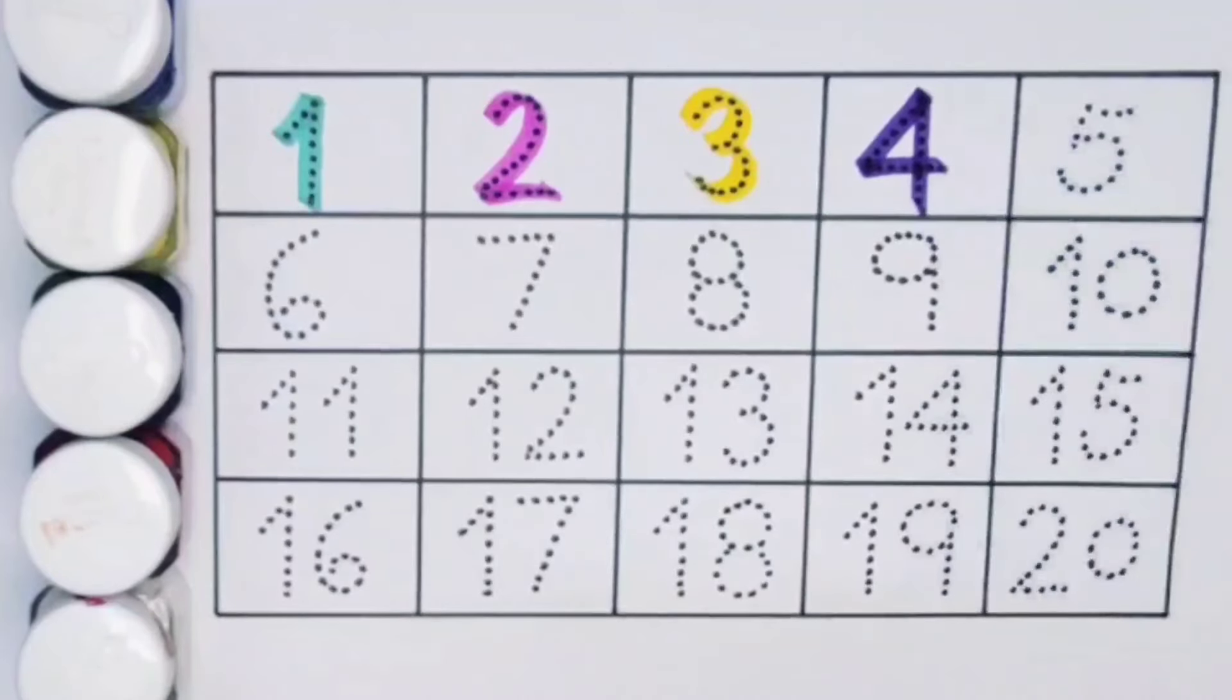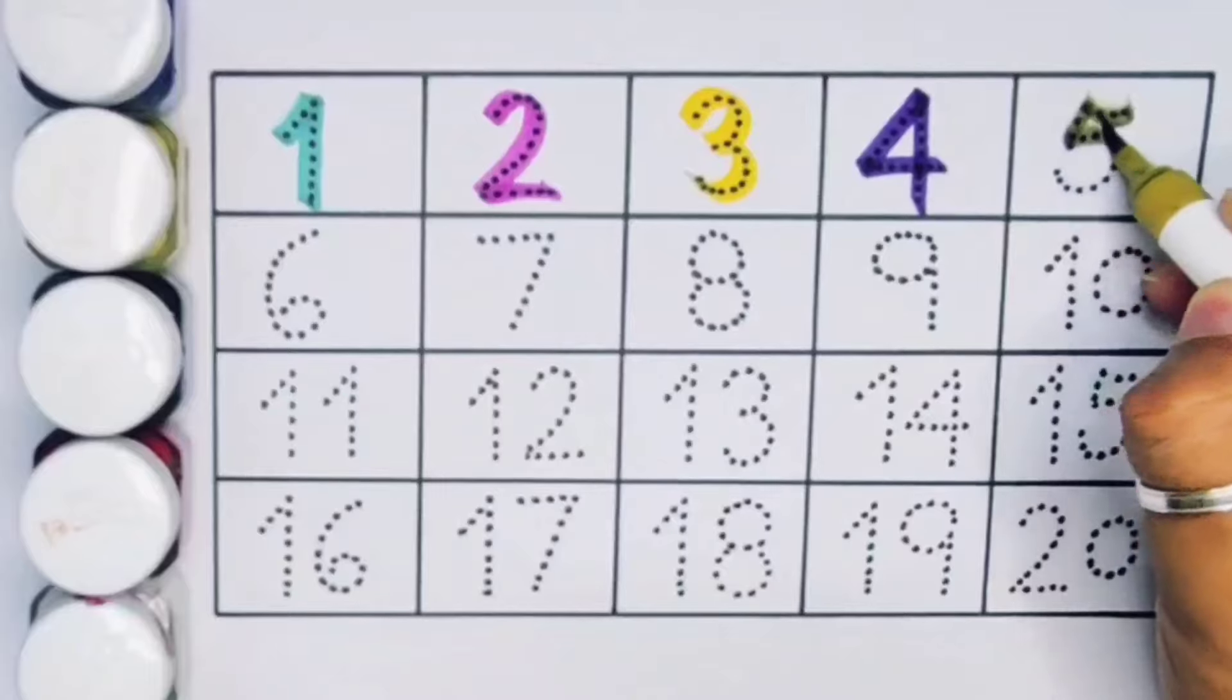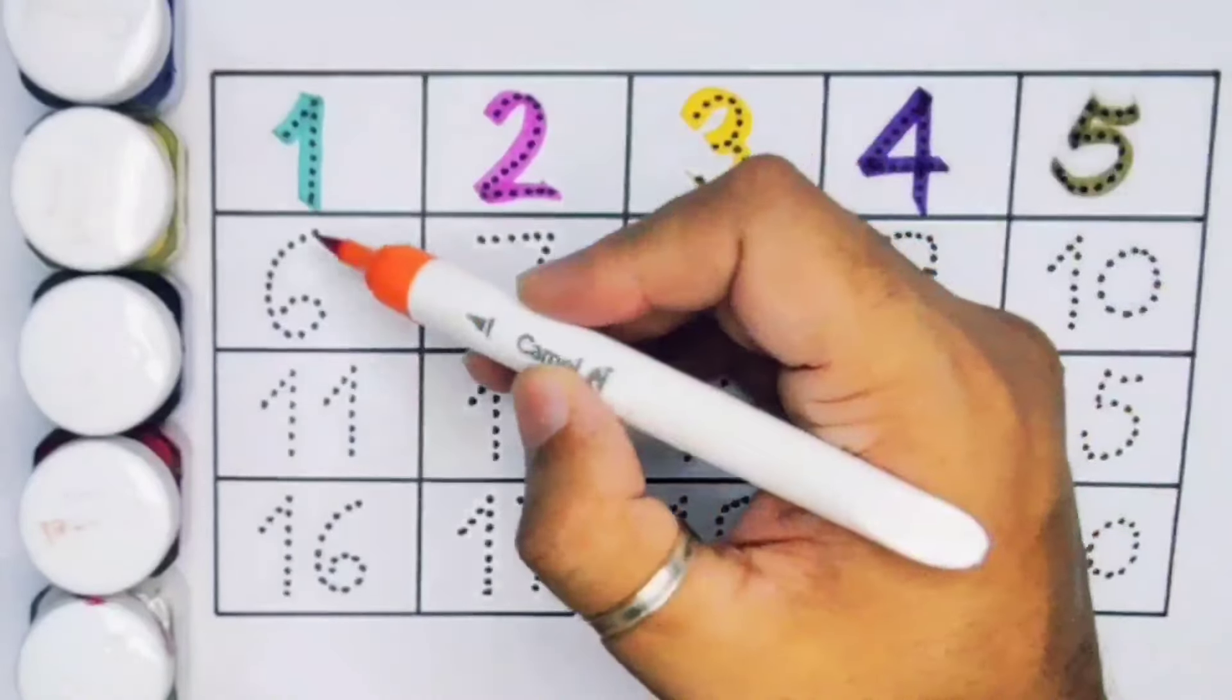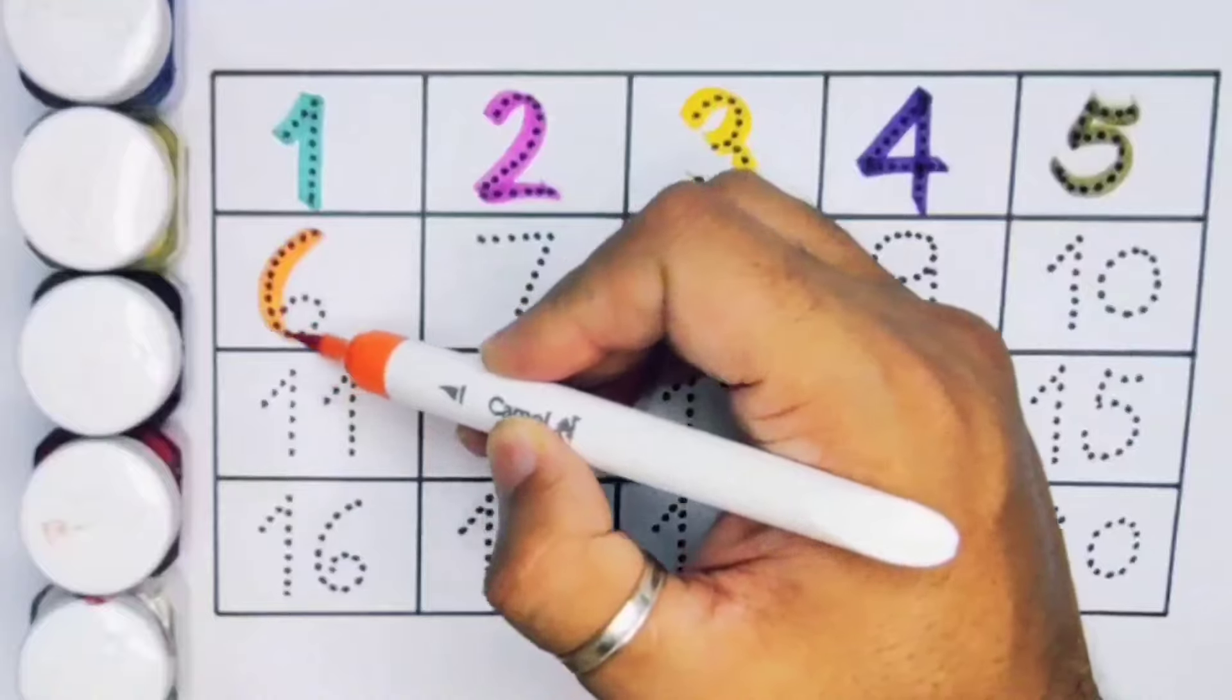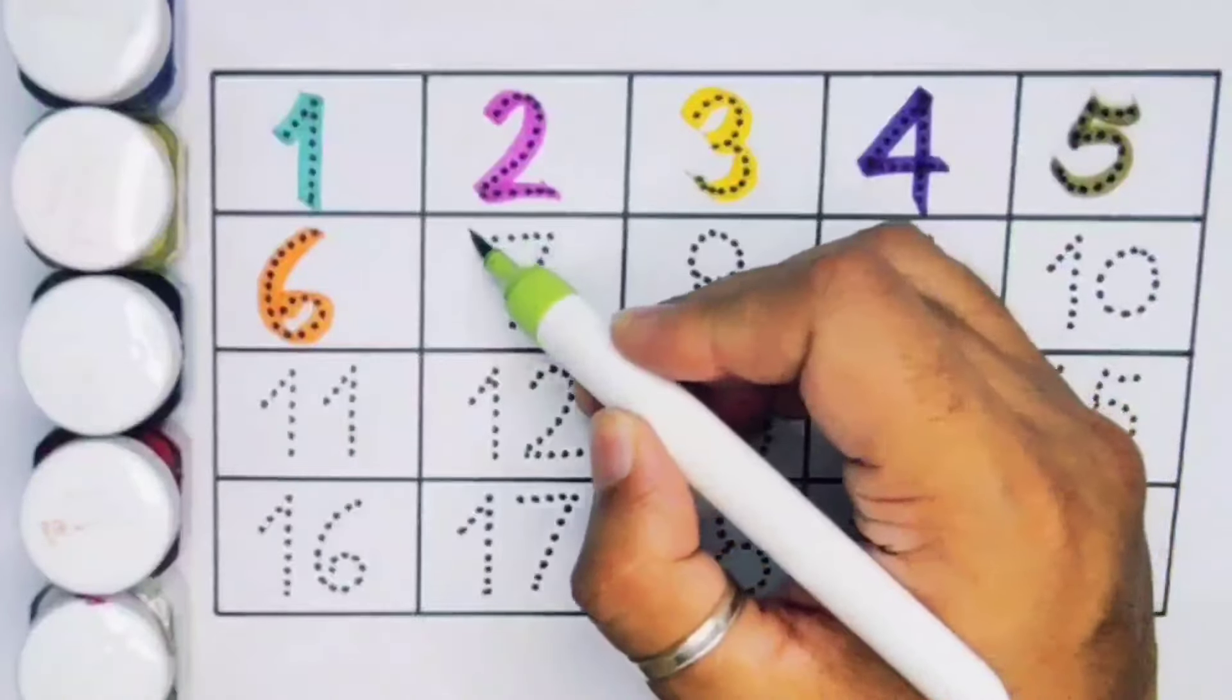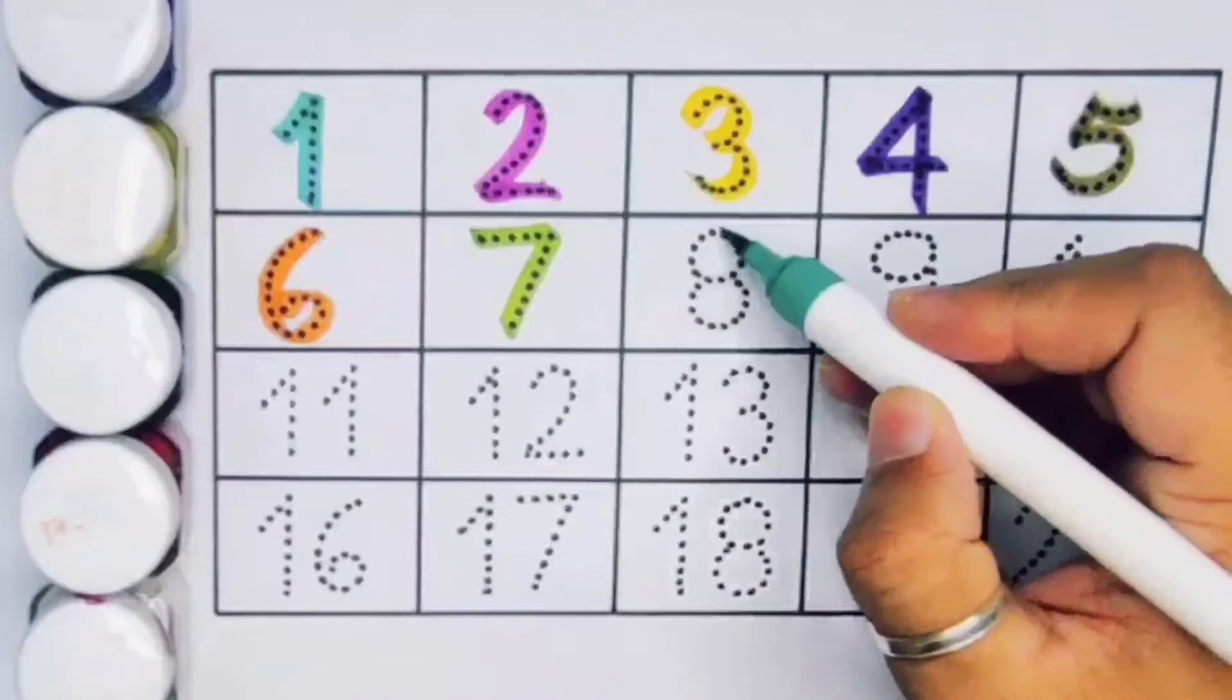Next 5, number 5. Next kids 6, number 6. Next kids 7, number 7.